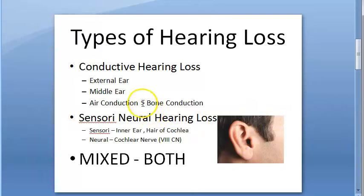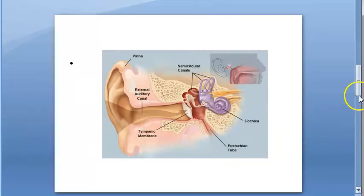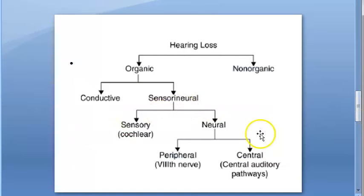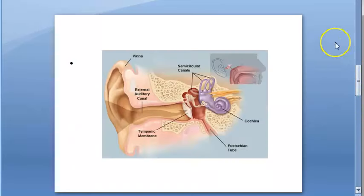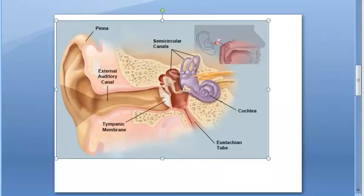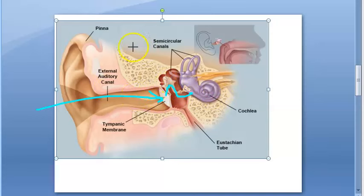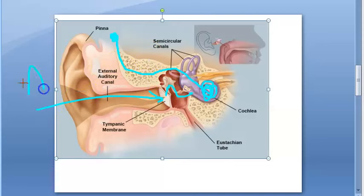There are two important terminologies — bone conduction and air conduction. Air conduction is the normal way we hear: sound travels via air, hits the tympanic membrane, goes via the ossicles to the inner ear. Bone conduction is different: if you place a vibrating tuning fork on the skull, the vibration is transmitted directly to the inner ear, bypassing the outer and middle ear.